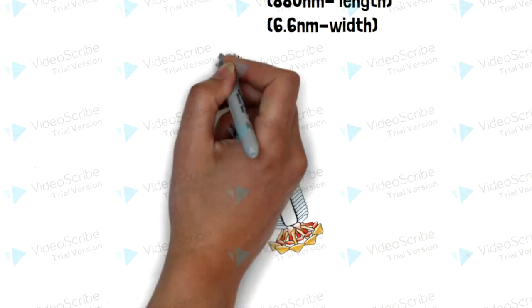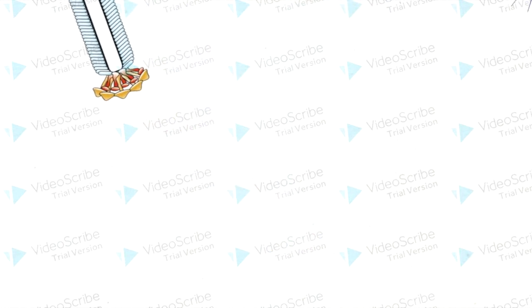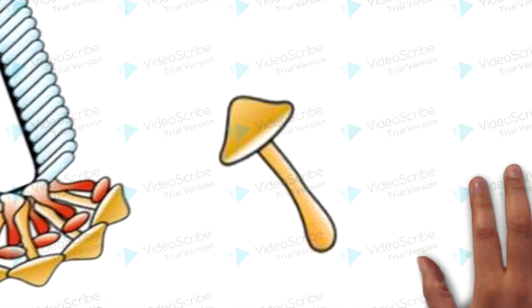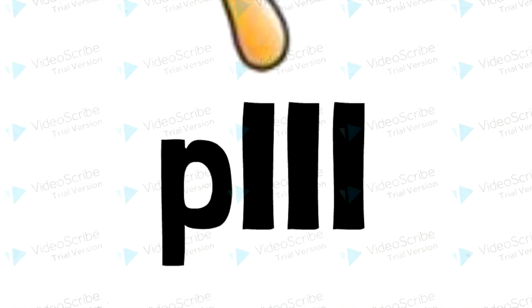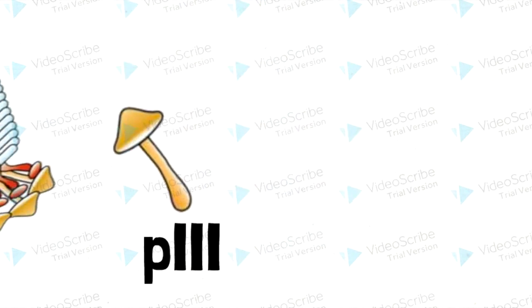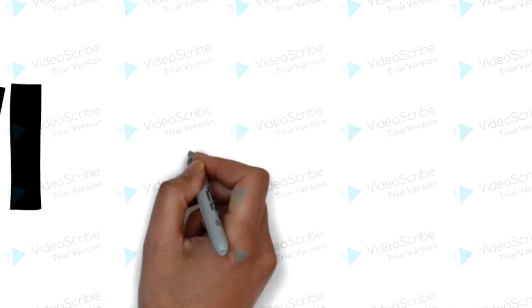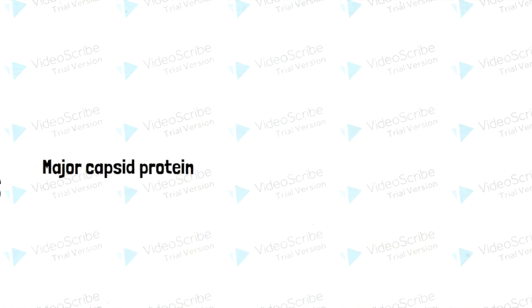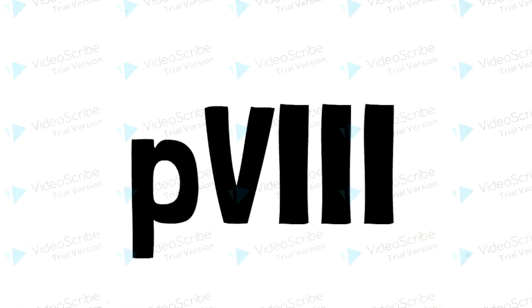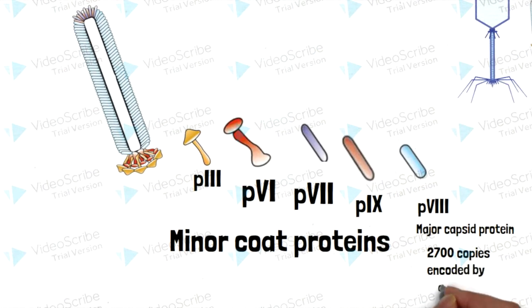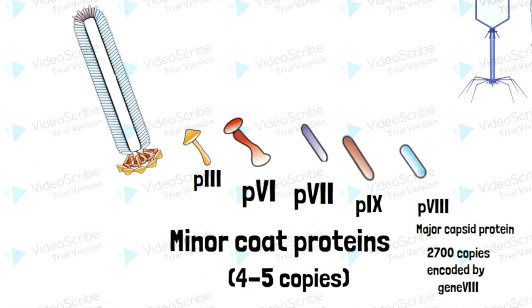Structurally, the M13 phage consists of 5 different proteins, which include the minor coat proteins. You can see the yellow mushroom-like structure referred to as P3. Besides that, the red-colored mushroom-like structure is known as P6, followed by P7, P9, and the major capsid protein P8. The phage predominantly consists of 2700 copies of the P8 protein encoded by gene VIII, with 4 to 5 copies of the minor coat proteins capping each end.